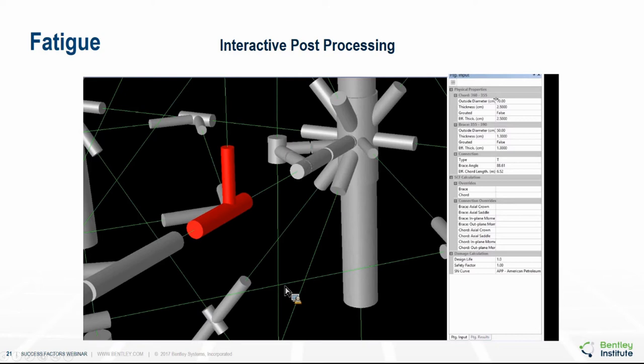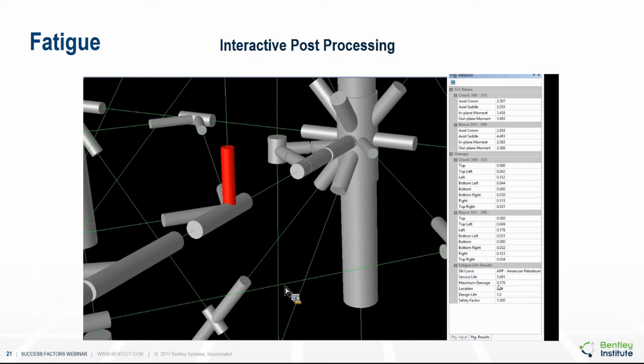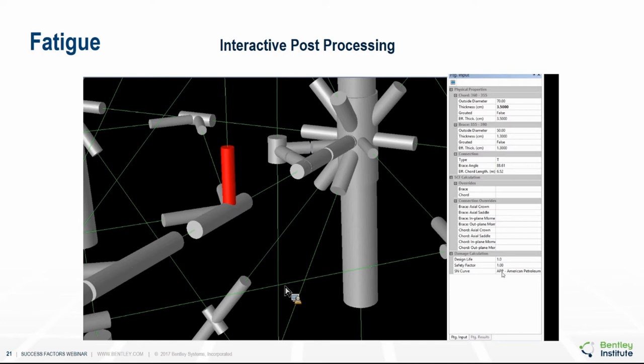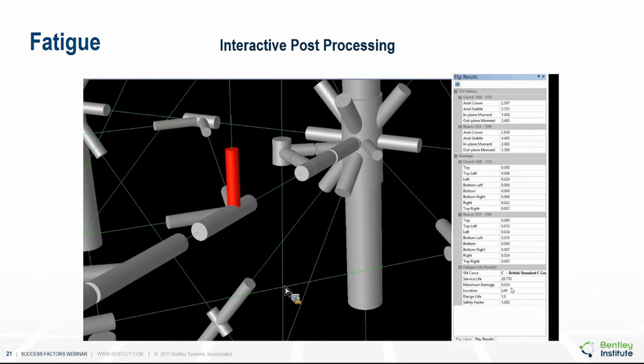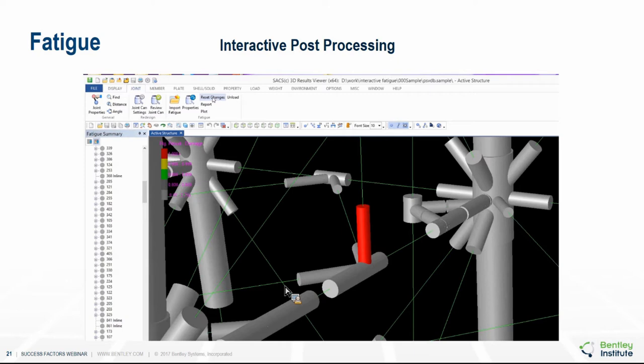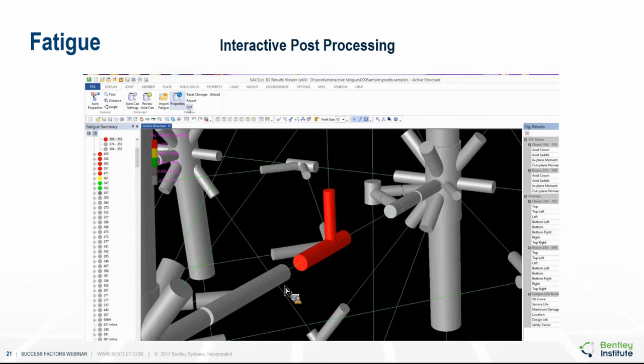The maximum damage and its location on a joint can also be seen, and the user can get the same information by clicking on the members directly in the model. For interactive redesign, the user can change parameters such as geometry, SCF approach, and SN curve being used, and the program will instantaneously output the damage and the new design life corresponding to those changes. Each change is highlighted in bold, and the user can revert to original values by clicking the reset changes button.